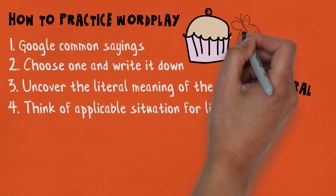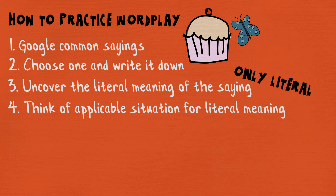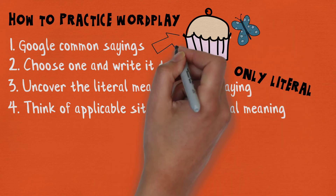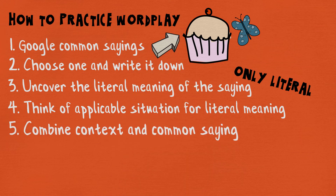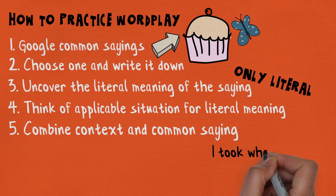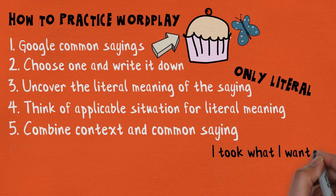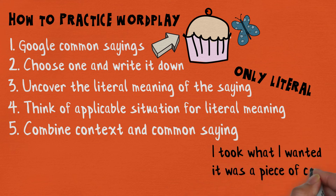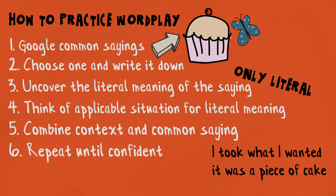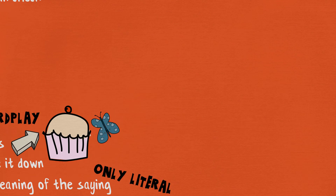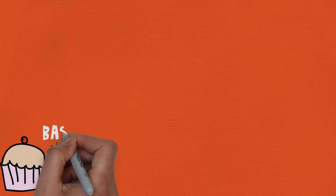For example, 'a piece of cake' means easy — but what if it really meant a piece of cake? Five, combine the context with the common saying. In our case it could be: 'I took what I wanted, it was a piece of cake.' Six, repeat the process until you feel you could do it automatically.